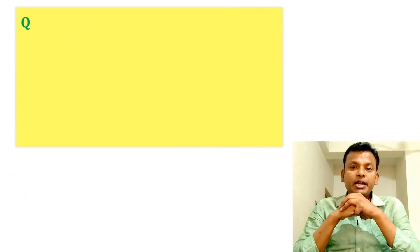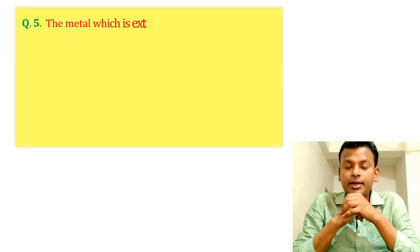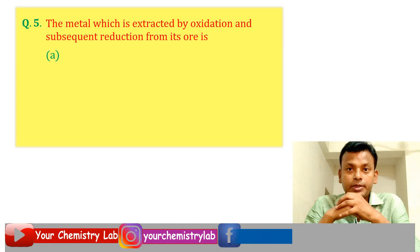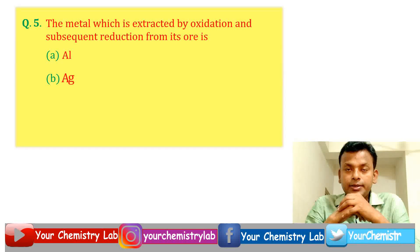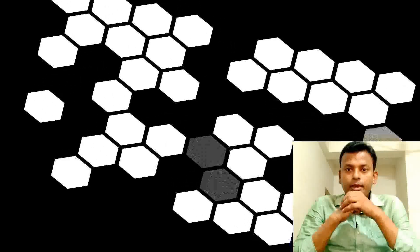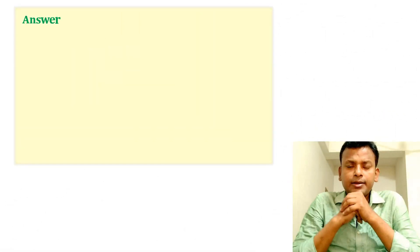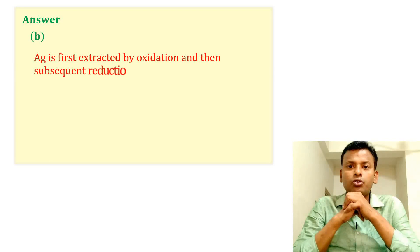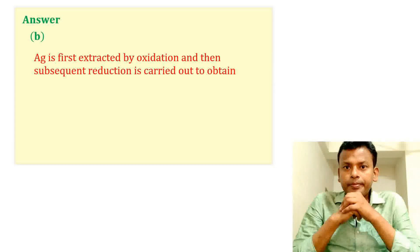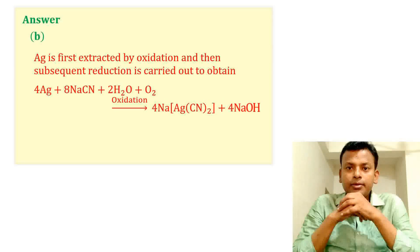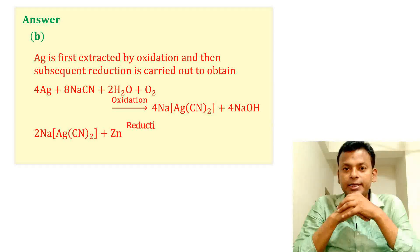Question 5: The metal which is extracted by oxidation and subsequent reduction from its ore is which option? Answer: Option B is correct. Silver is first extracted by oxidation and then subsequent reduction is carried out to obtain it. The reaction shows first oxidation and then further reduction. So option B is correct.